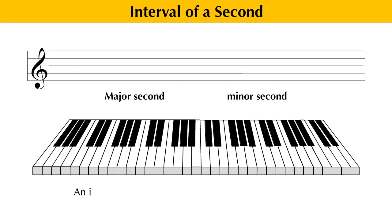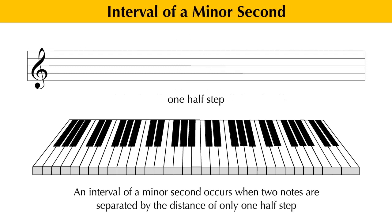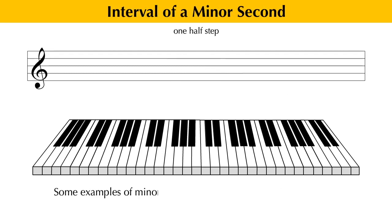For example, an interval of a minor second occurs when two notes are separated by the distance of only one half step. Some examples of minor second intervals would include the notes B and C.